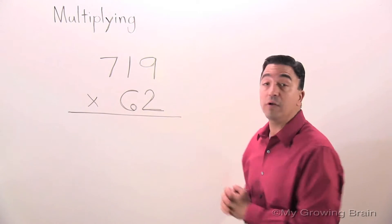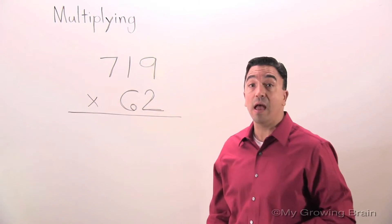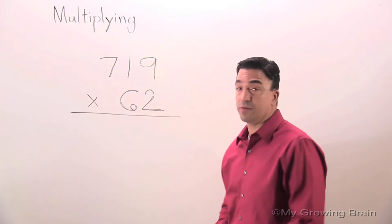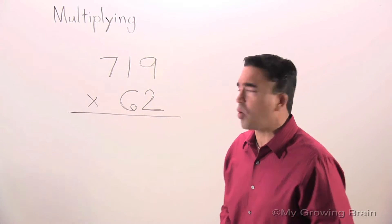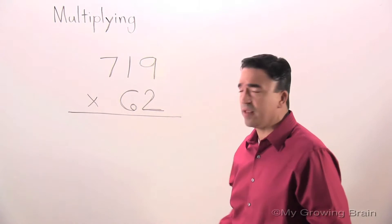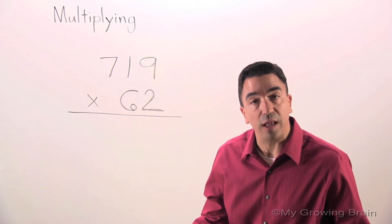I am going to multiply 719 times 62. The first thing I'm going to do is draw lines between the digits to keep it organized.